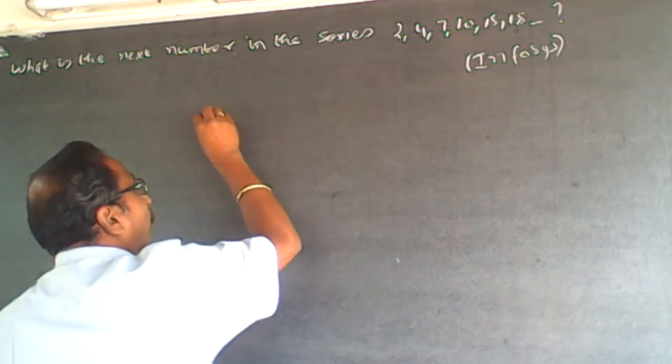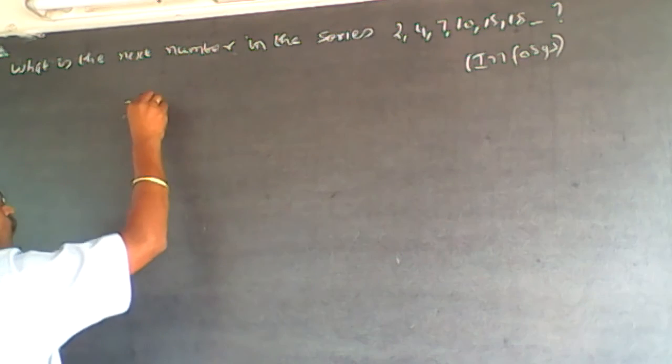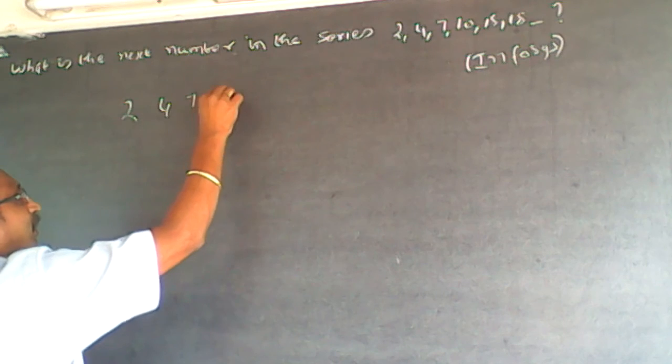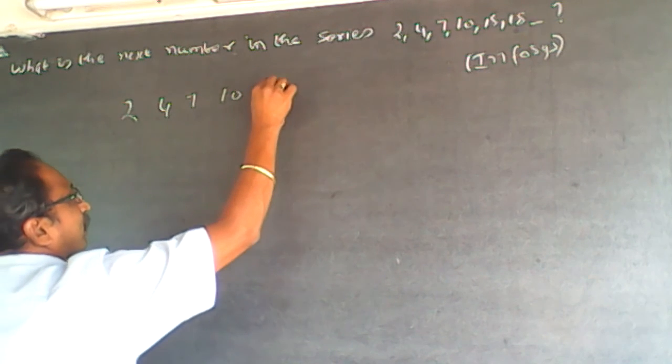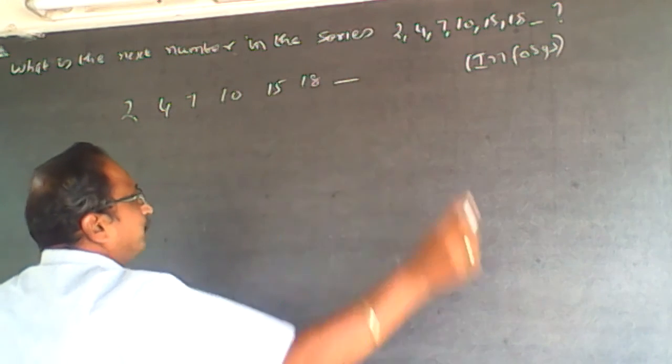See, what happens is, first is 2, 4, 7... 2, 4, 7, 10, 15, 18. Next number is being asked.